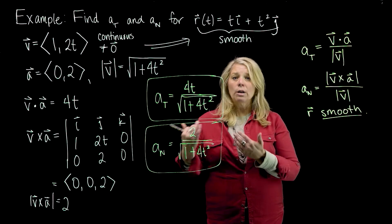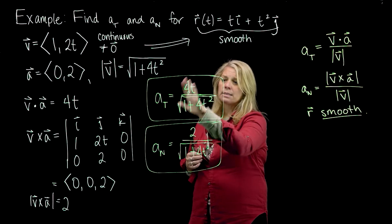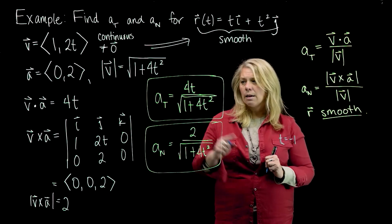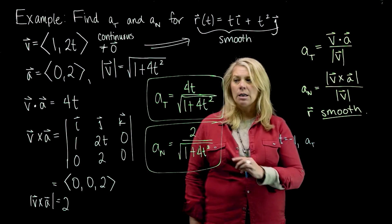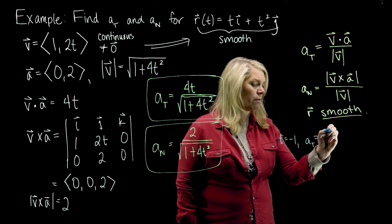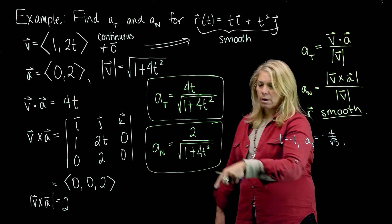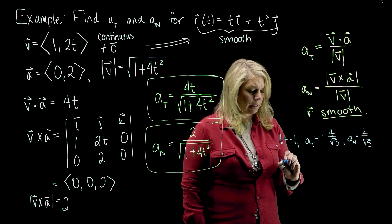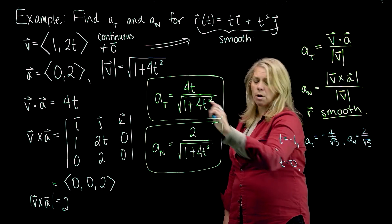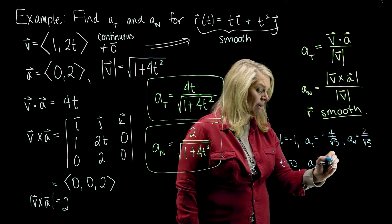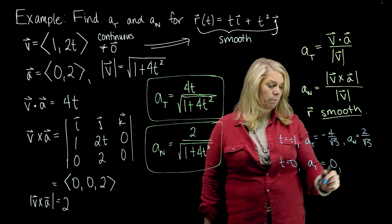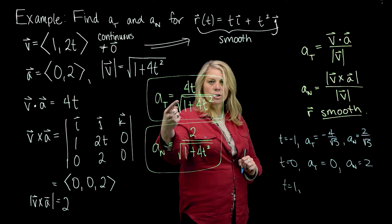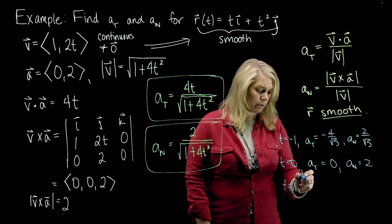When t equals negative 1, the tangential component of acceleration will be negative 4 over the square root of 5, and the normal component of acceleration will be 2 over the square root of 5. When t equals 0, the tangential component of acceleration will be 0 and the normal component will be 2. And when t equals 1, the tangential component of acceleration will be 4 over the square root of 5.